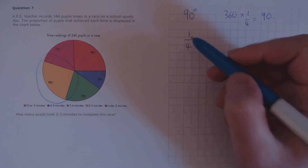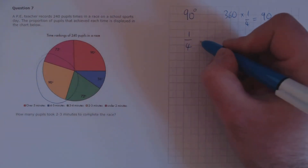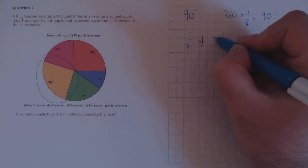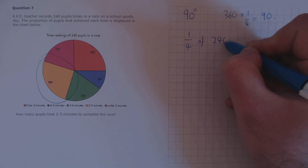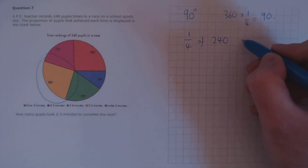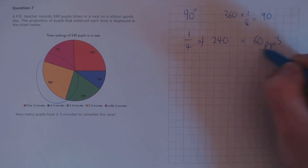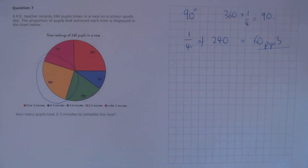If it's a quarter of the total circle, it's also a quarter of the total number of pupils. So a quarter of 240 is 60 pupils that took two to three minutes to complete the race.